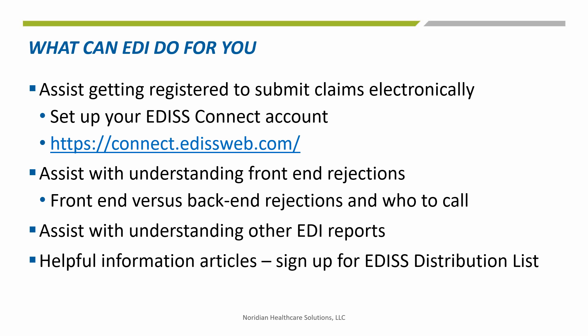Some of the other things our EDI team can assist you with is understanding the reports you may receive for front-end rejections. A front-end rejection is an edit that stopped your claim from making it to the processing system. You will not see any information in the portal in this case or get any information out of our IVR, or interactive voice response system — you will get the information on reports you receive from EDI. A back-end denial will be seen in the portal and denial information will appear on your remittance advice; for these denials, you will contact the customer service center for your jurisdiction. You will also want to use the EDI distribution list for information about processing delays and other helpful information such as articles about common problems.